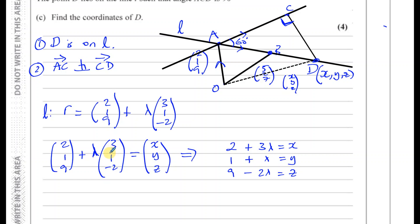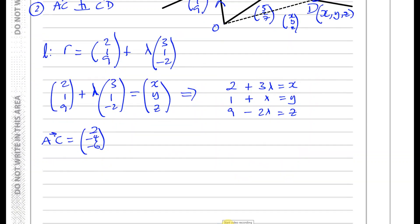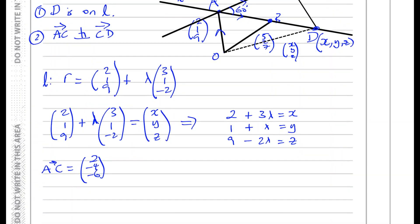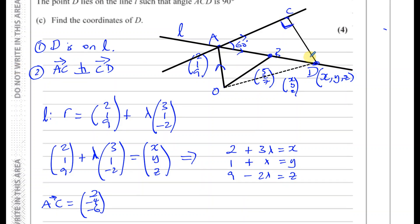The other thing is that AC and CD are perpendicular. The vector AC we already got from the previous part of the question. We know that AC is perpendicular to CD, so we need to know what the vector from C to D is. The vector from C to D: if you have O, C, and D, then C to D equals O to D minus O to C.